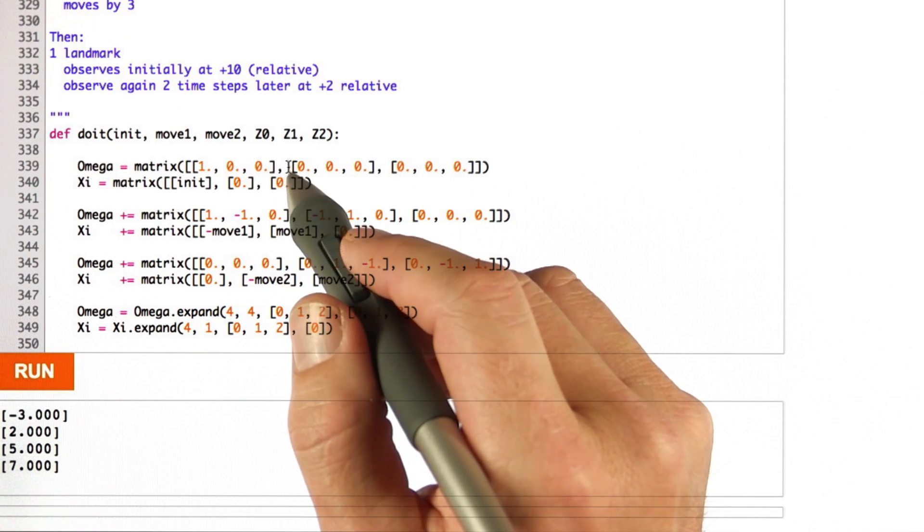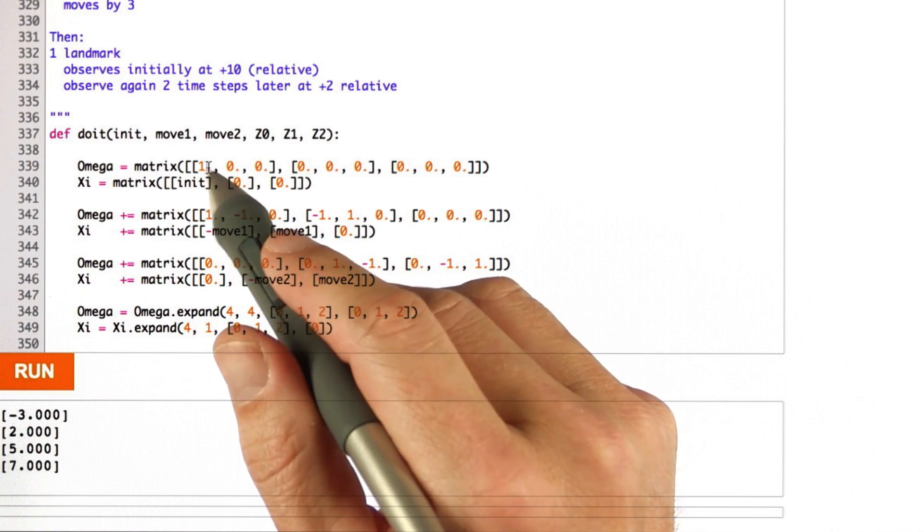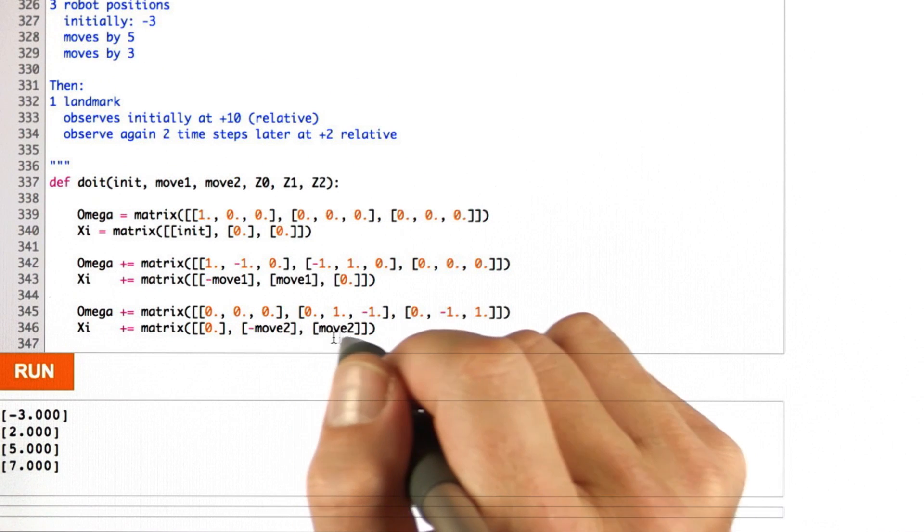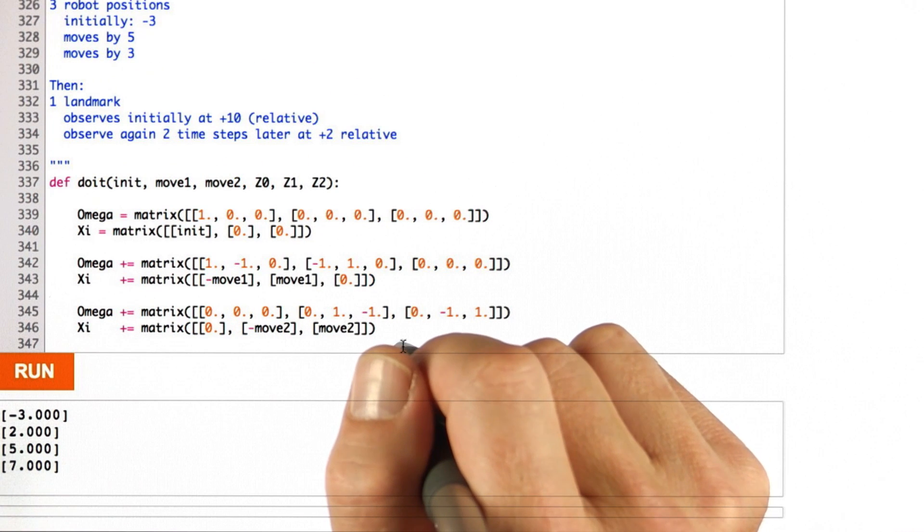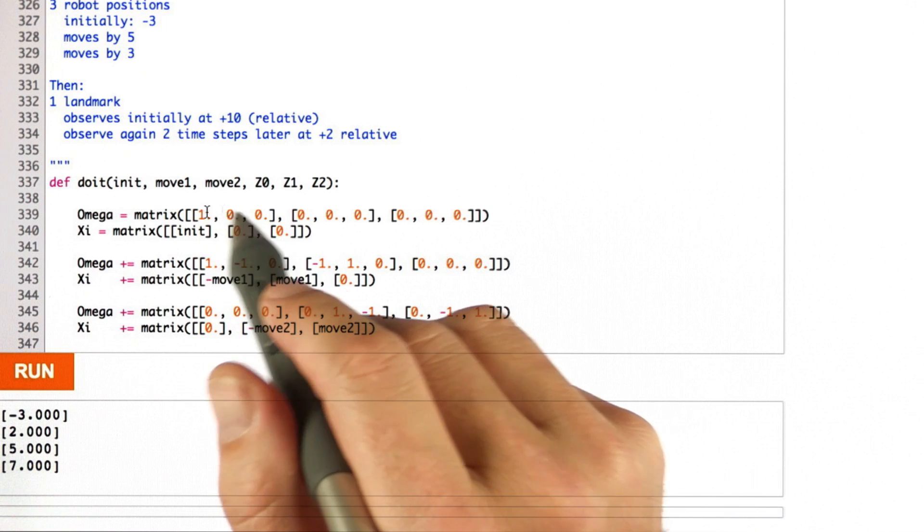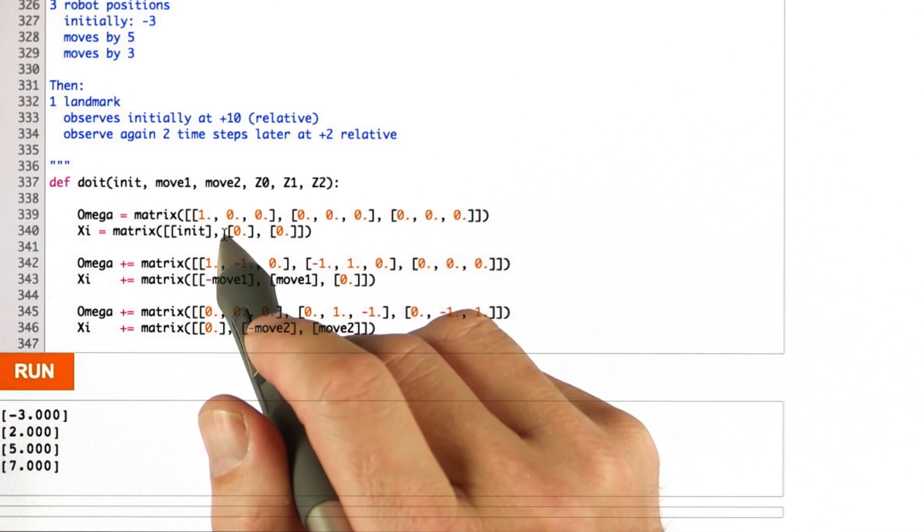Here's the code that you produced before. That's my version of it where we have the initial 3x3 matrix. And then upon using the expansion command, you can now increase those to a 4x4 matrix and 4x1 vector.